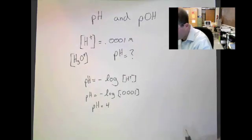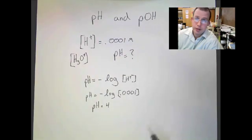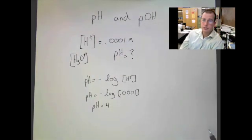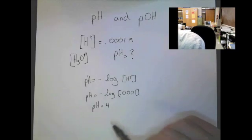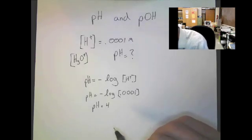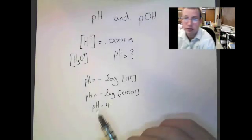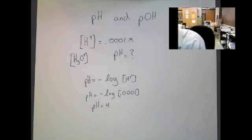Now, the other thing that we can look at is the relationship between pH and pOH. That relationship is actually pretty simple. The more acidic something is, the lower the pH. The more basic something is, the higher the pH. Now, the pOH scale is reversed.